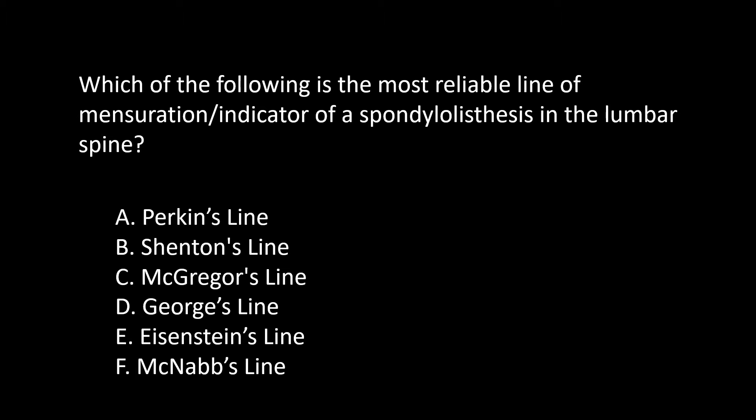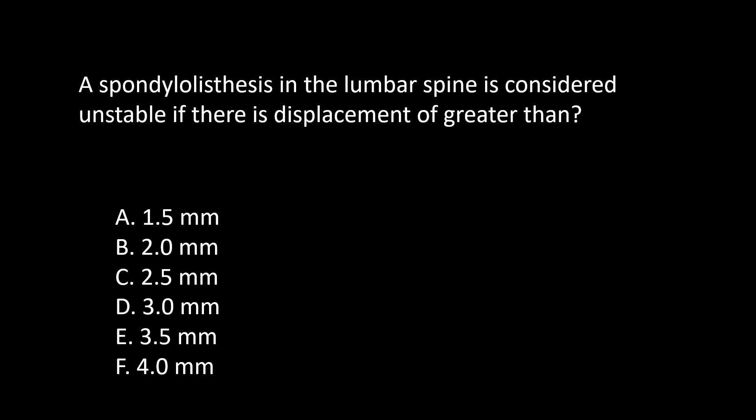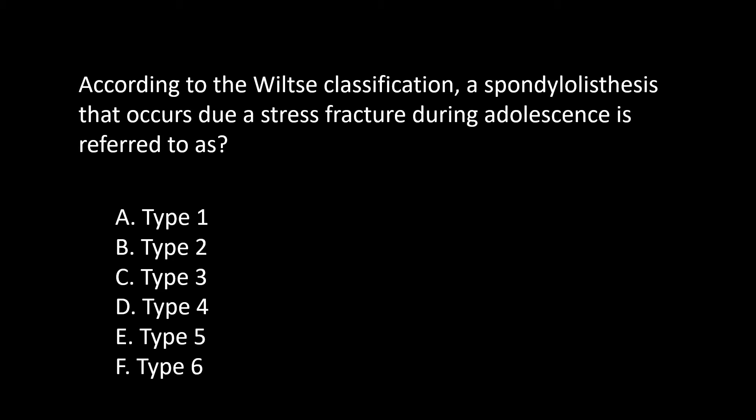The answer is George's line. A spondylolisthesis in the lumbar spine is considered unstable if there is displacement of greater than four millimeters. According to the Wiltse classification, a spondylolisthesis that occurs due to a stress fracture during adolescence is referred to as a type 2 spondylolisthesis.